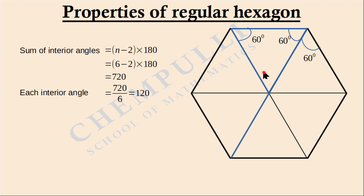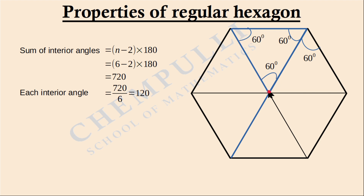Applying the angle sum property of a triangle — the sum of interior angles equals 180 degrees — and since two angles are each 60 degrees, the third angle is 180 − 120 = 60 degrees. All three angles are 60 degrees, so this triangle is an equilateral triangle. The same can be proved for all such triangles formed inside the hexagon.